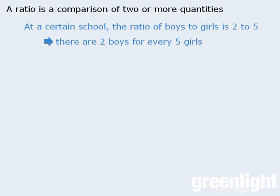There are three different types of notation we can use to express ratios. We can express the ratio as two to five, or we can express it using a colon to separate the terms, or we can express the ratio as a fraction.